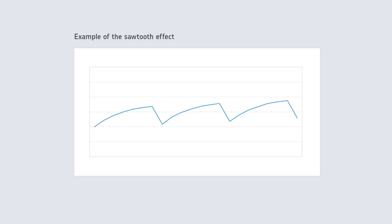Then, at the next point of reform, performance drops off again — hence what we call a sawtooth effect. This is really the key reason why comparable outcomes is so important to ensure fairness at the point of reform, because it ensures that the first cohort of students, where we know their performance is likely to be a little bit lower, are not penalised just because they happen to be the first cohort to sit that qualification.